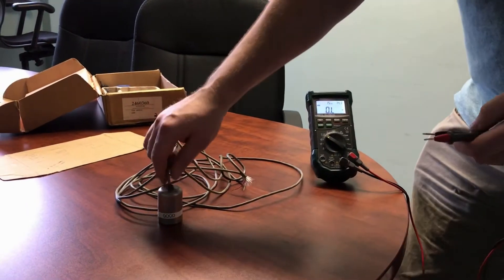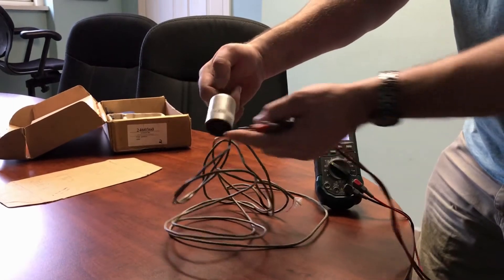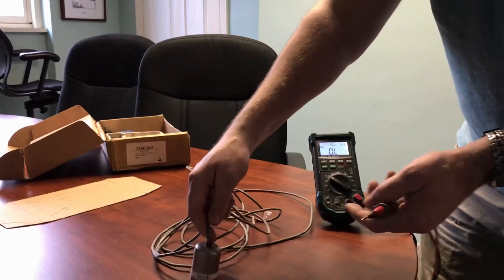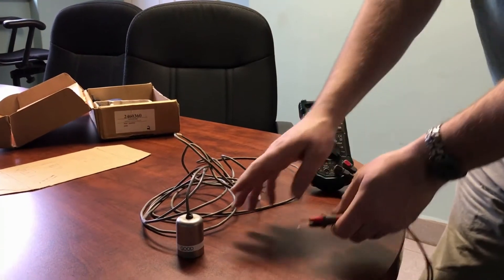We call it a bell sensor because it kind of looks like a bell. It has a float inside, a single float, and then it almost looks like a bell. These are commonly used in AST steel tanks.